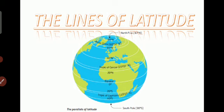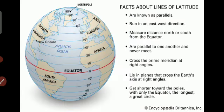Lines of latitude are parallel lines, as seen in the diagram showing the north pole, south pole, and equator with degree markings. Latitude is the angular distance between the equator and any point north or south of it on the earth's surface. They are also known as parallels and run in an east-west direction. They can be measured north or south from the equator, which is 0 degrees. Going north: 10°, 20°, 30°, 40°, and so on.